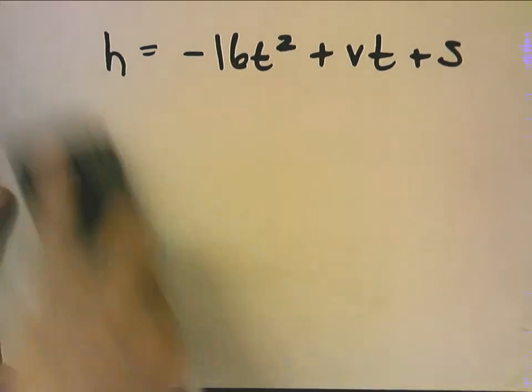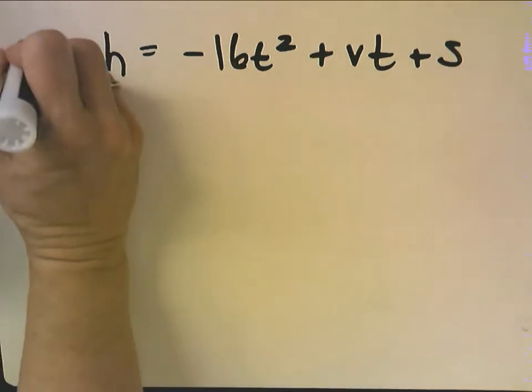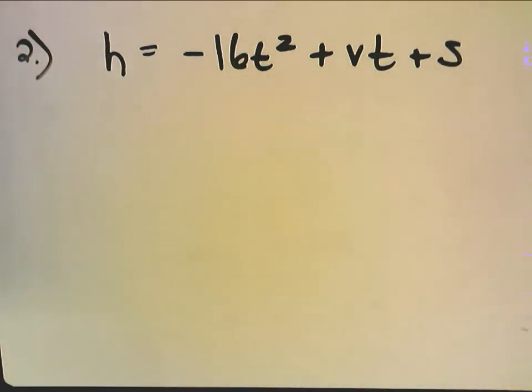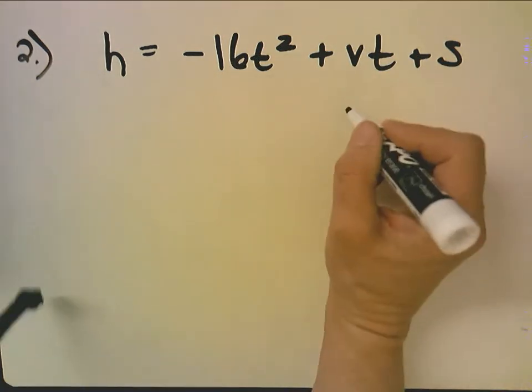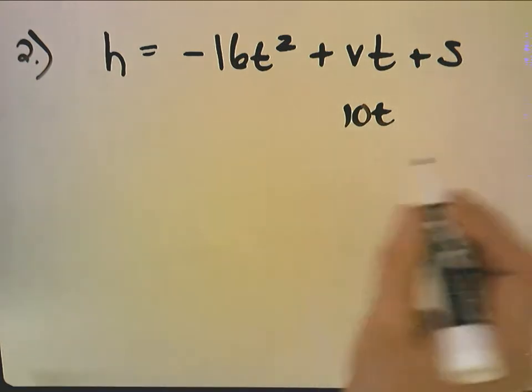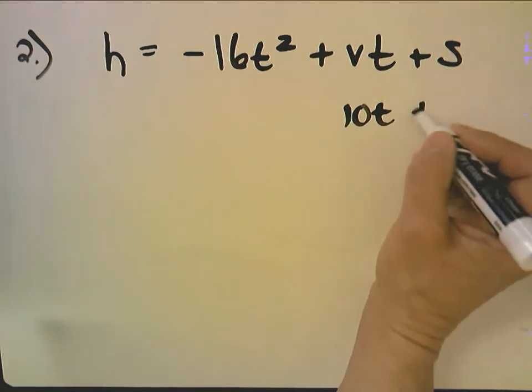Now number two, we use the same equation. Says the spittle bug jumps into the air with an initial vertical velocity of 10 feet per second, so v is 10 feet per second. Write an equation that gives the height of the spittle bug as a function of time in seconds since it left the ground. So if it started on the ground that's zero.